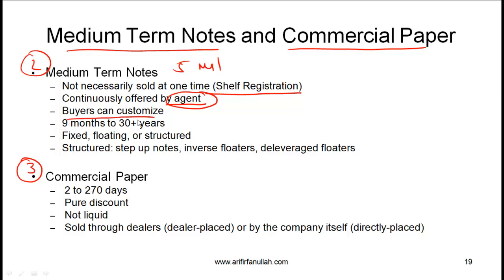Another important characteristic of medium term notes is that the specific characteristics of the debt instrument can be customized by buyers, which is a feature buyers appreciate. The par value, coupon payments, structure of coupon payments, and whether any derivative instrument is involved can all be customized. The agent, issuer, and buyer work together to figure out what works best for the buyer in terms of price and yield.